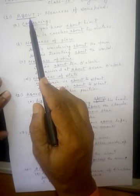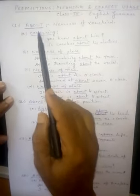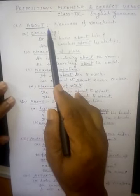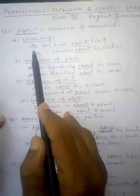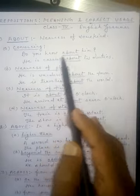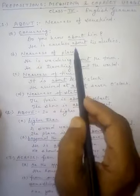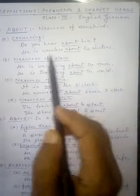First preposition: about. We see the correct usage of about. It expresses nearness of some kind. First, we see 'concerning'. Do you know about him? He is careless about his duties. This is the concerning sense.